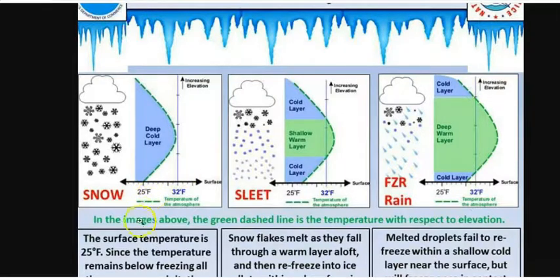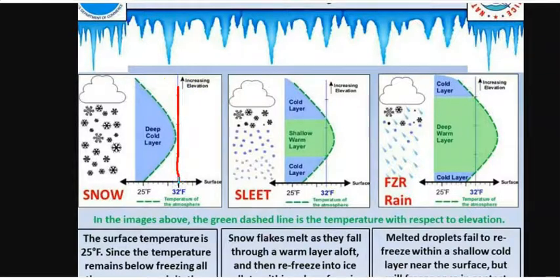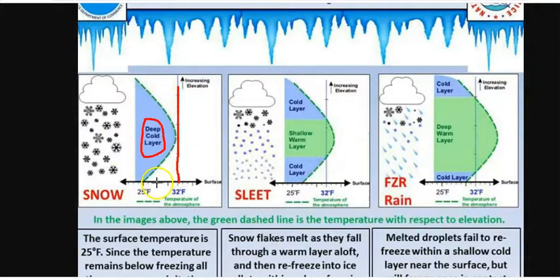The simple one is snow. When you look at the temperature profile — here's a little diagram of the atmosphere — this line right here is 32 degrees Fahrenheit, which is the ice point. That's where you get ice forming. You can go from a liquid to a solid at 32 degrees. So when all layers are below 32 degrees, we can have snow.